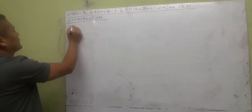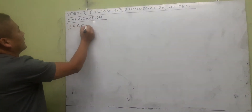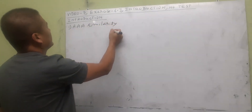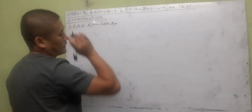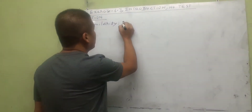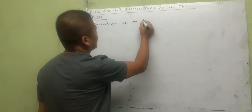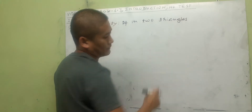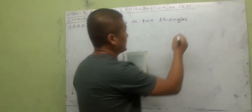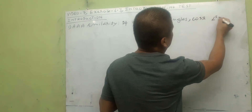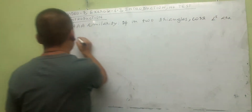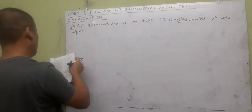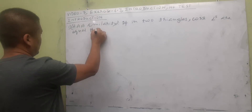The first theorem is called AAA Similarity. This chapter will deal with the criteria for similarity of triangles. The AAA Similarity theorem states: if in two triangles corresponding angles are equal, then the two triangles are similar.